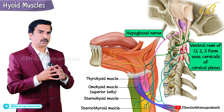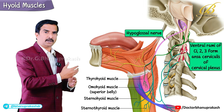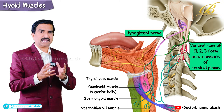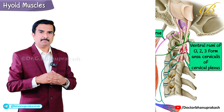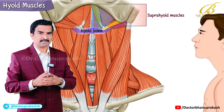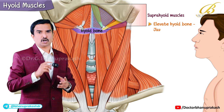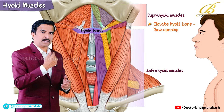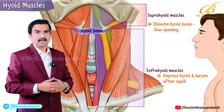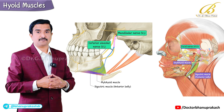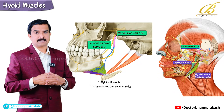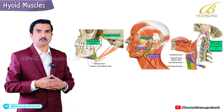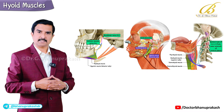To quickly recap: the suprahyoid muscles elevate the hyoid bone and assist in jaw opening. Similarly, the infrahyoid muscles depress the hyoid bone and larynx after swallowing. Innervation comes from a combination of cranial nerves 5 and 7, and the cervical spinal nerves C1 to C3. With that, we have concluded the topic of hyoid muscles.